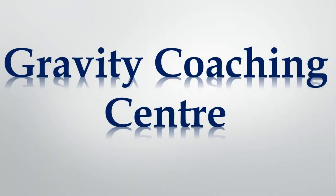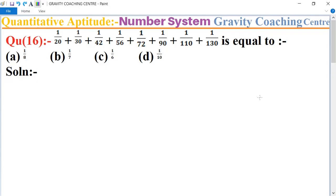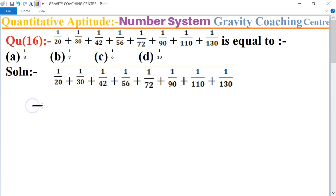Welcome to our channel Gravity Coaching Center, aptitude chapter number system, question number 16. In this question, add the fractions. Now we can write 1/20 as 1/(4×5), plus 1/30.